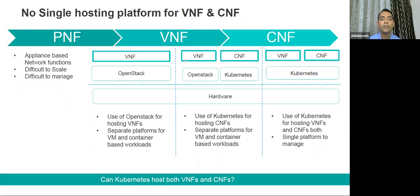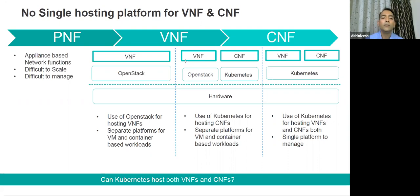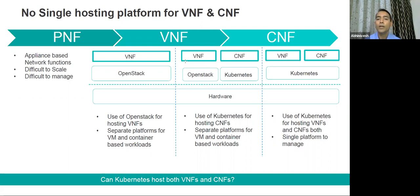Then came VNF — virtual network function — where hardware and software segregation was done. So a firewall, for example, was given as a VNF that you could run on any x86 hardware. But it was still VM-based — virtual machine based. The most commonly used open source platform for VNF hosting is OpenStack. And then after VNF came CNF — cloud native network function, also called container native network function. In CNF, those virtual network functions which were VM-based were converted into container-based.